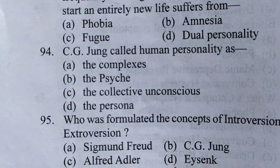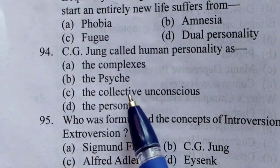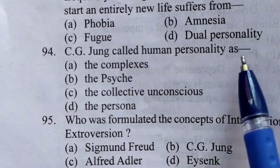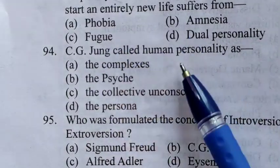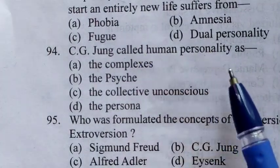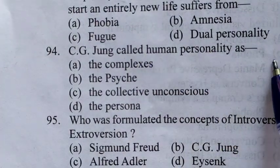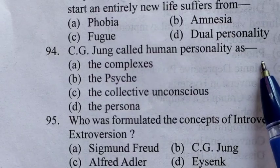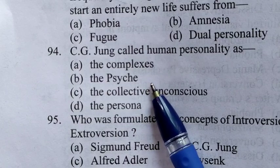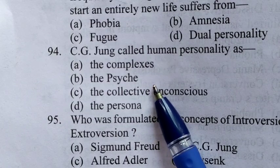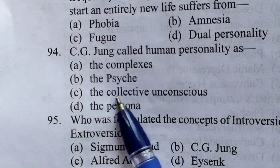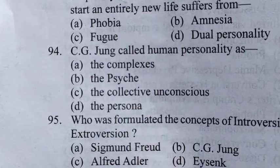94th question: C.G. Jung called human personality as — C.G. Jung ek scientist hain. Unke anusaar jo human personality hai, manav ka jo vyaktitva hai, woh kya hai? Toh iska answer hai 94th ka B — a Psyche. Psyche, chetna ko kehte hain — Mind, Soul, aatma — yeh sab Psyche jo word hai, psychology mein uske andar aate hain.